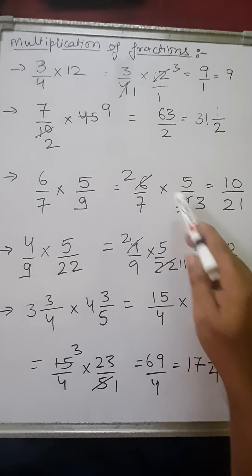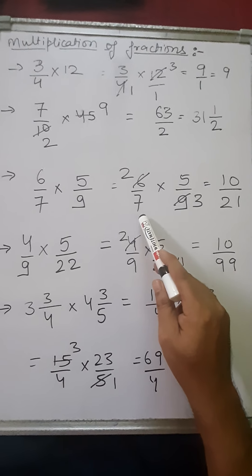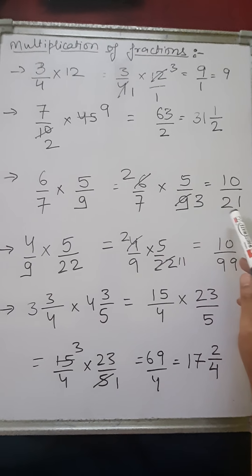3 twos are 6 and 3 threes are 9. Now you cannot cancel anything, so just multiply. 5 twos are 10 and 7 threes are 21.